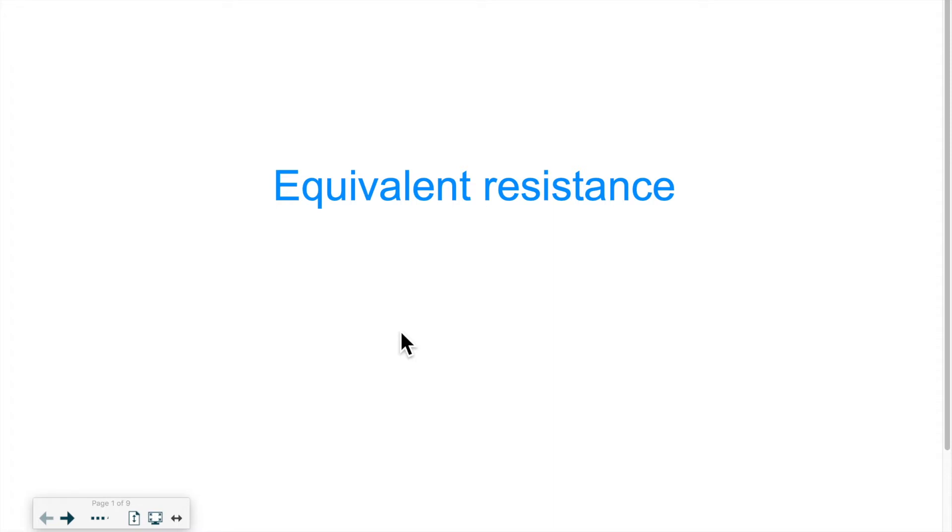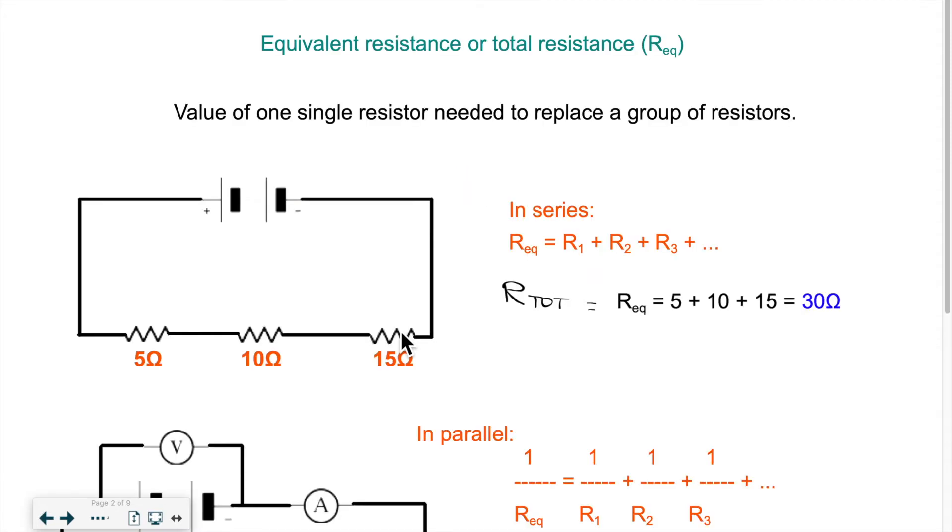So we've talked about resistors and resistance before, and we know that resistance is the ability of a component to slow down the electricity and basically make the electrons work really hard so they can give up some of their energy, and we convert that energy either into heat or light or sound or anything else that we need.